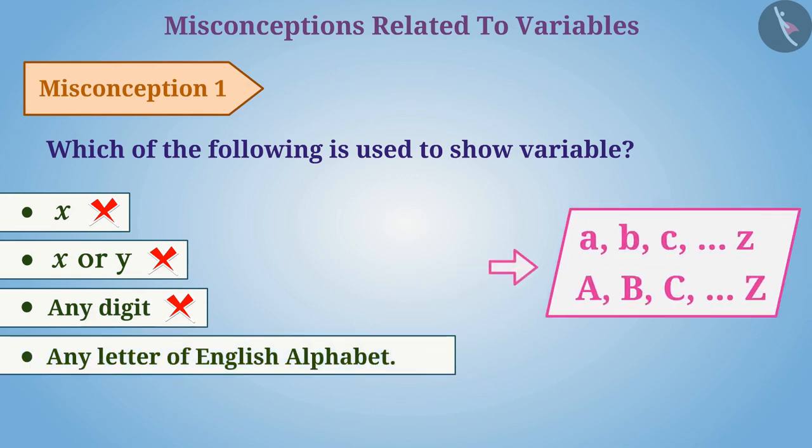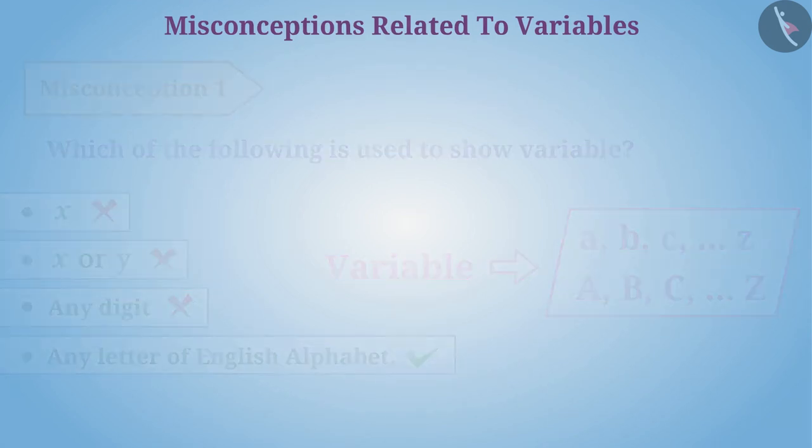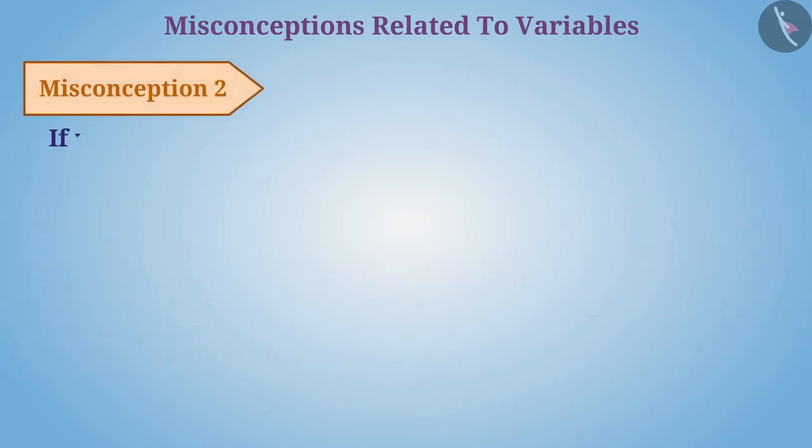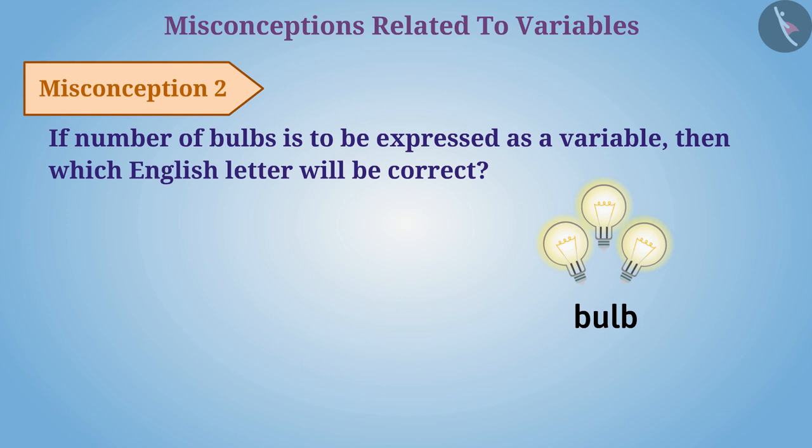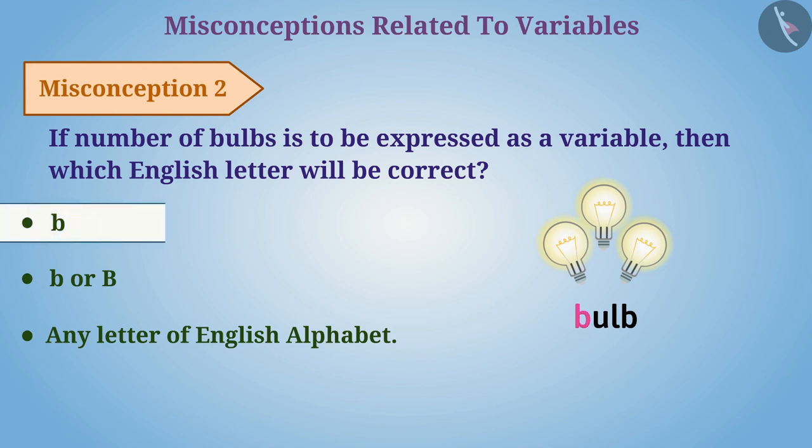Misconception 2: If the number of bulbs is to be expressed as a variable, then which English letter will be correct? Sometimes because of the belief that only the first letter of the name can be used to show a variable, using only small letter b for representation is the wrong answer.